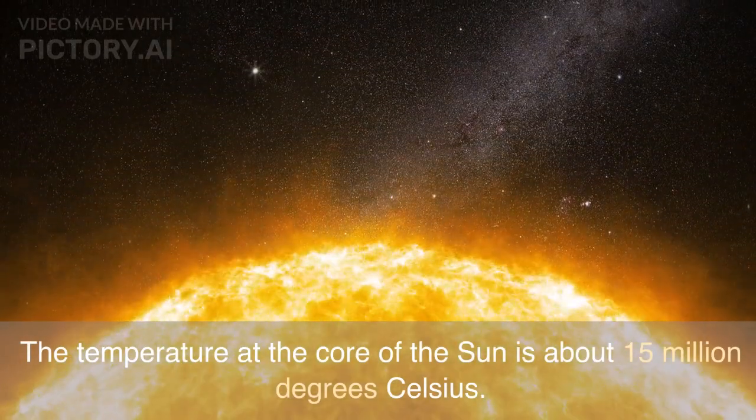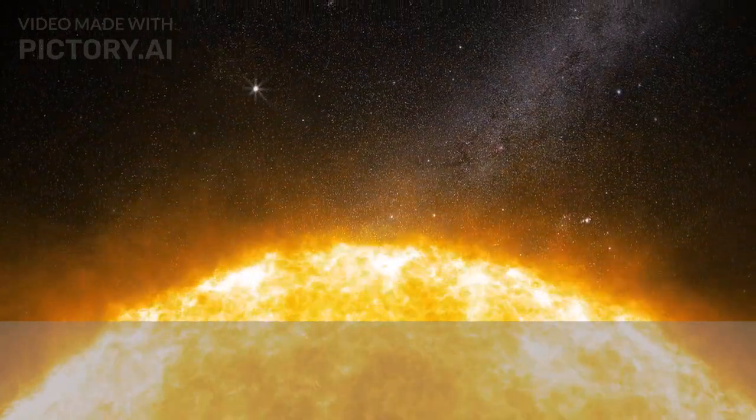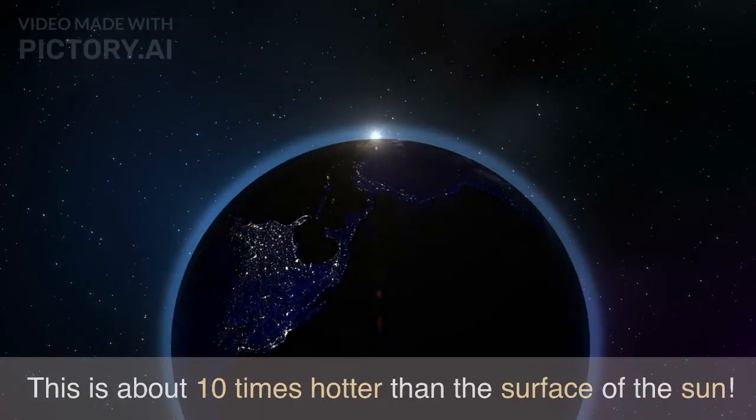The Sun's core is very hot. The temperature at the core of the Sun is about 15 million degrees Celsius. This is about 10 times hotter than the surface of the Sun.